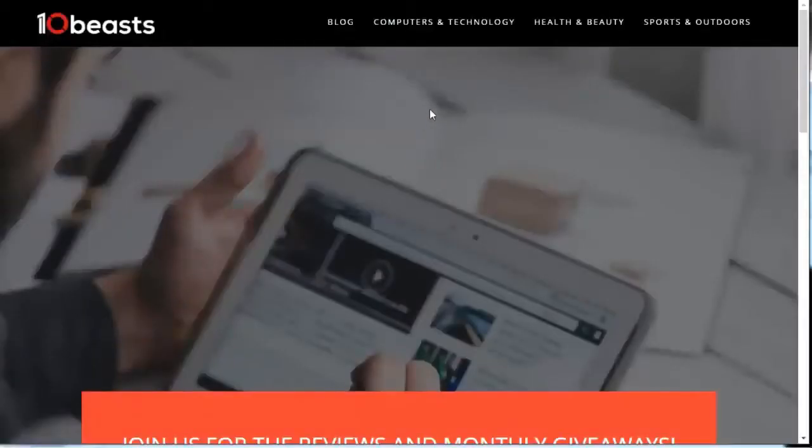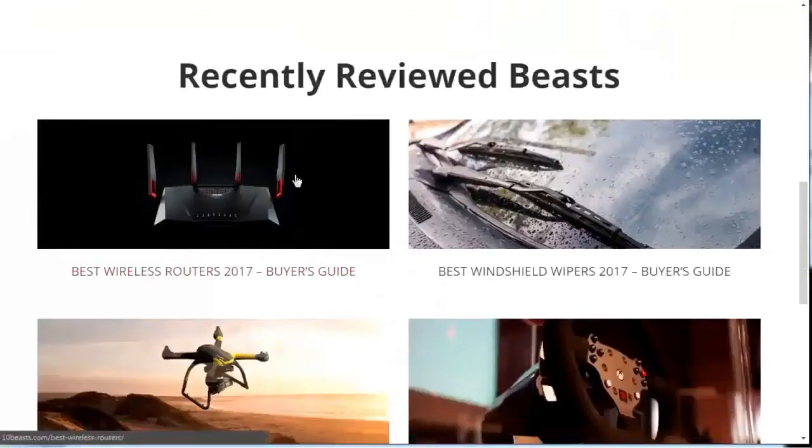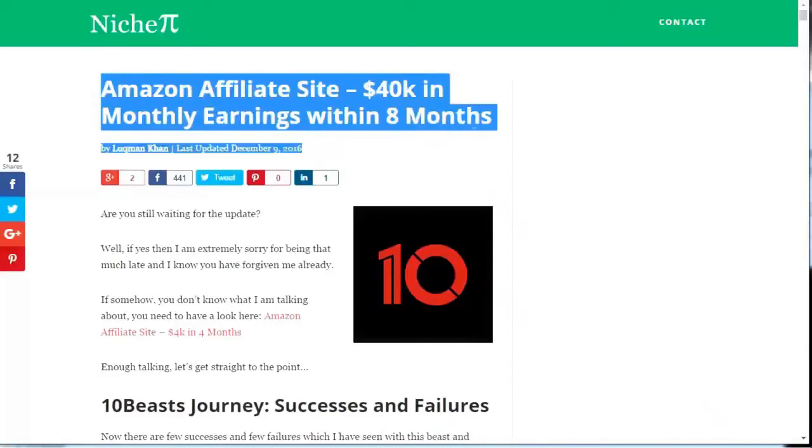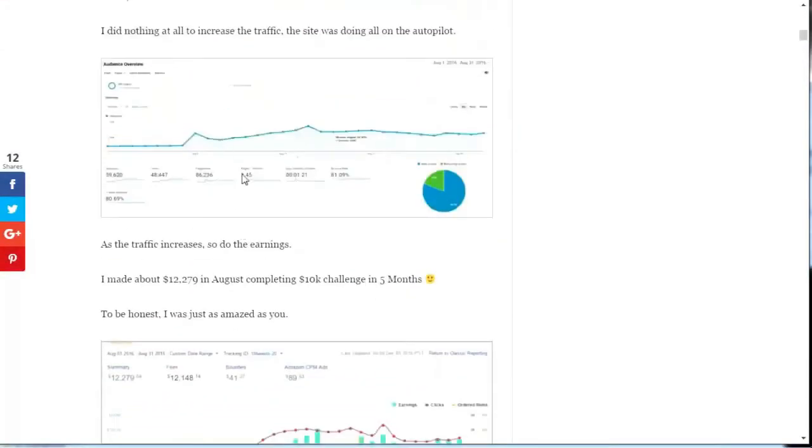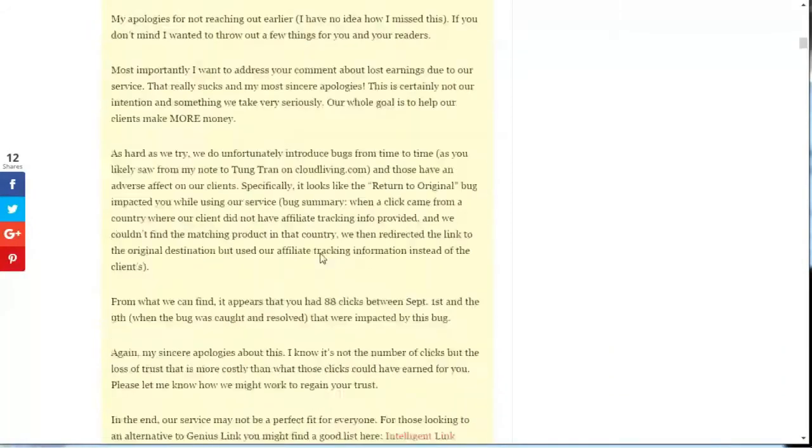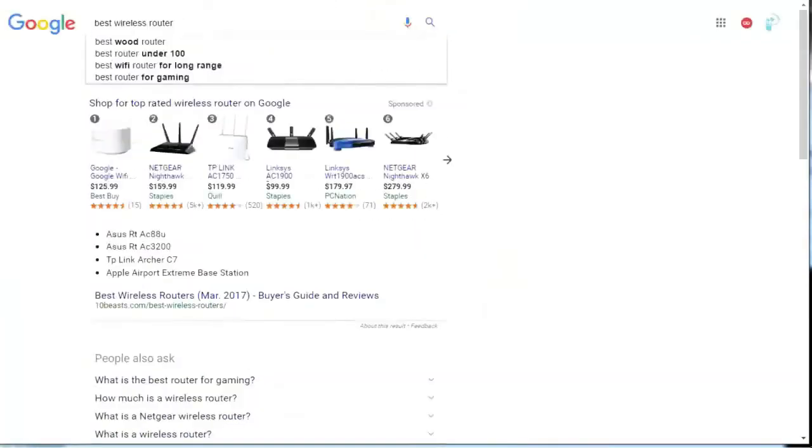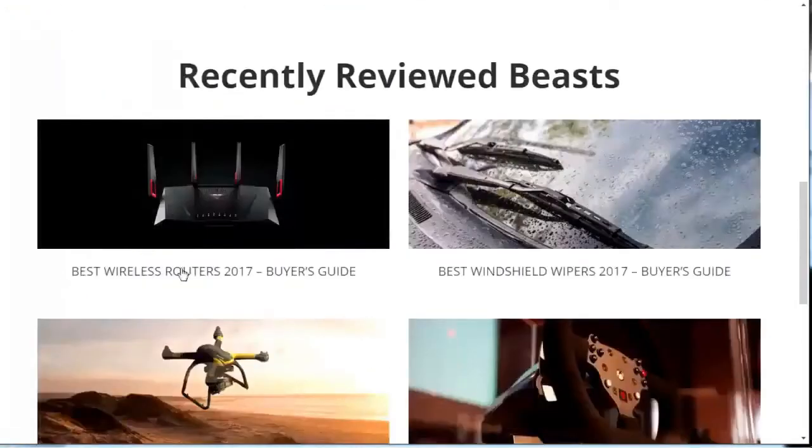So another thing I want to talk about is 10beasts.com. Now this is a website where the creator, his name is Lukeman Khan, created an Amazon affiliate site and has earned over $5,000 in the first four months and over $40,000 in eight months. So I figured I'd share his story here with you guys and show what's actually possible. Now the website is a list website where people search for terms like best wireless router or best wireless router 2017 and click on his site.